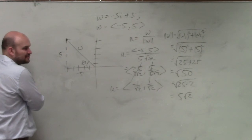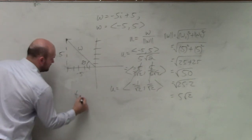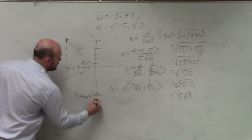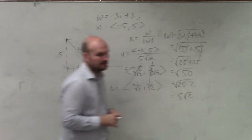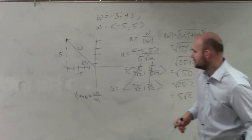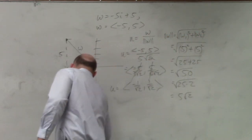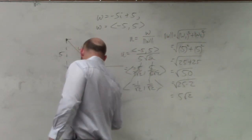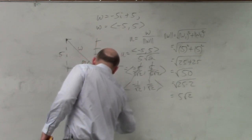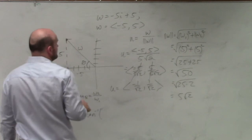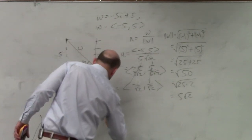Tangent of theta equals w2 over w1. So therefore, to find this, I'm just going to use theta equals tangent inverse of w2, which is 5 over negative 5.